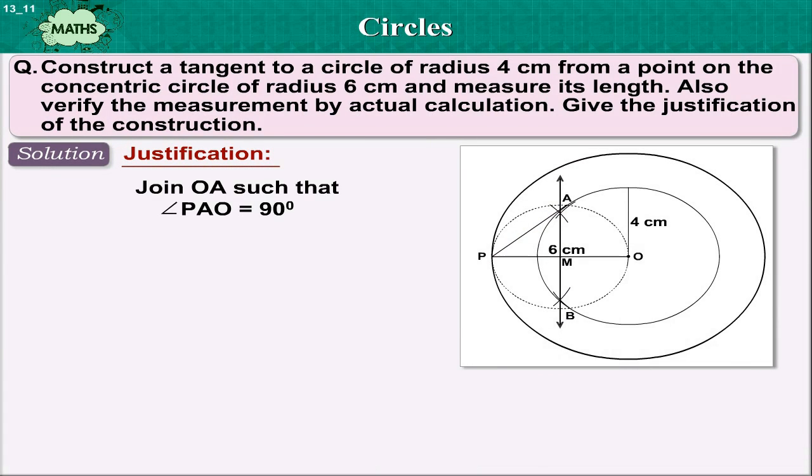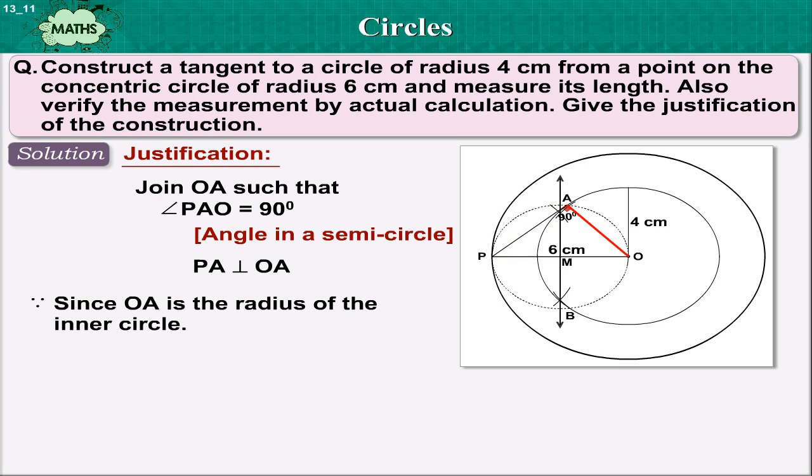Justification. Join OA such that angle PAO is equal to 90 degrees as it is the angle in a semicircle. So PA is perpendicular to OA. Since OA is a radius of the inner circle, therefore PA has to be a tangent to the inner circle.